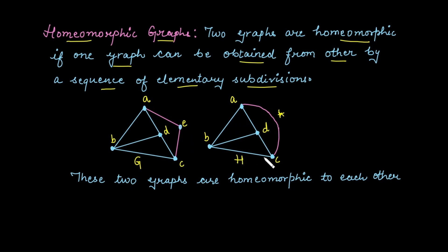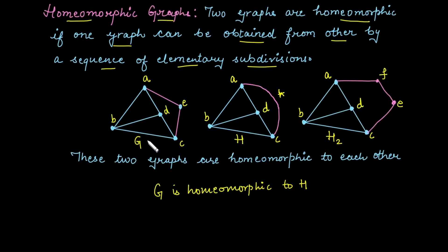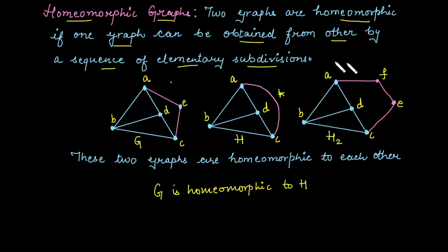By performing one single elementary subdivision we can get graph G from H, so we can say these two graphs are homeomorphic. Now check whether graph G is homeomorphic to H2. If you take an additional vertex and convert the single edge into two edges from A to F and F to E, we can say graph G is homeomorphic to H2, because we can get graph H2 from G by performing one single elementary subdivision.